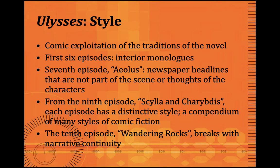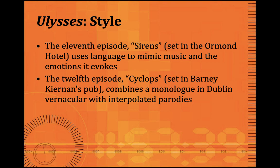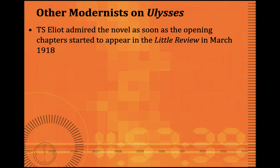The tenth episode breaks narrative continuity. The eleventh uses language to mimic music. The twelfth episode, called Cyclops, combines a monologue in Dublin vernacular with interpolated parodies set in Kiernan's pub. The thirteenth episode is a pastiche of romantic and magazine literature combined with interior monologue. It's an amazing novel, so different from any novel you will have seen.